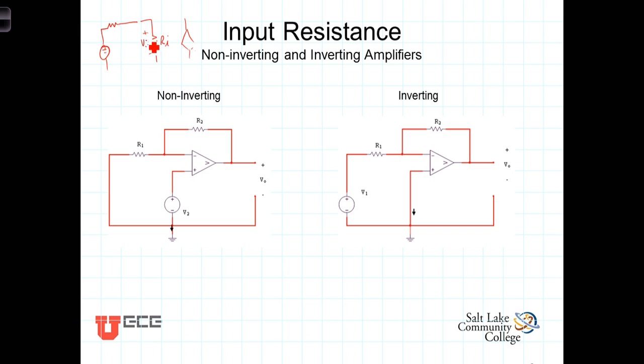If this is VN, the output is some scaled AV0 times VN. So between the source resistance of the source and the input resistance of the amplifier, we've got a voltage divider.